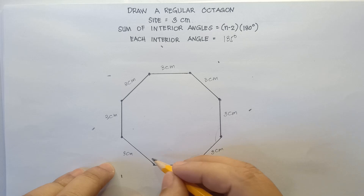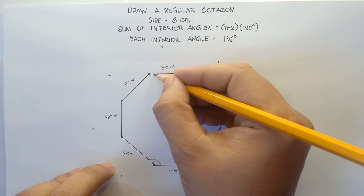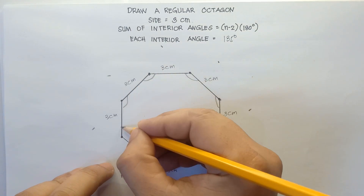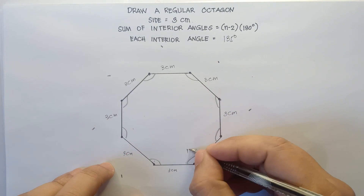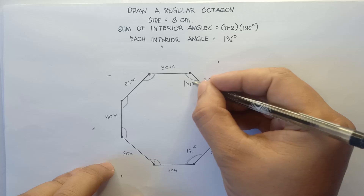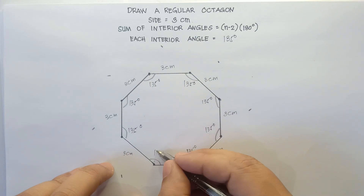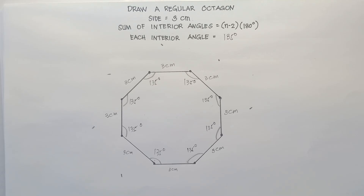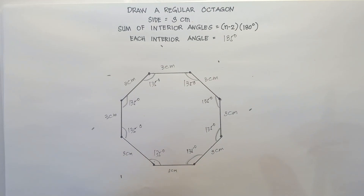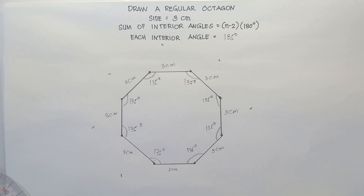3 centimeter, 3 centimeter. All sides must be equal. 3 centimeter, 3 centimeter. For the angles, this will be 135 degrees — 135, 135, 135, 135, 135, 135, and 135 degrees. All set, class. That's how you draw a regular octagon using the protractor and the ruler. Do not forget to like, share, and subscribe. This is Teacher MJ. Have a great day, class. Goodbye for now. Bye-bye.